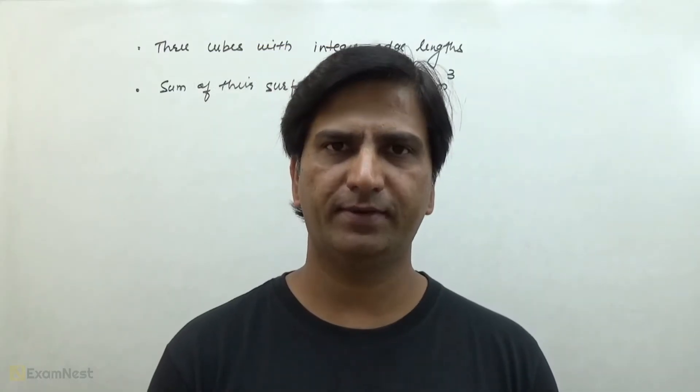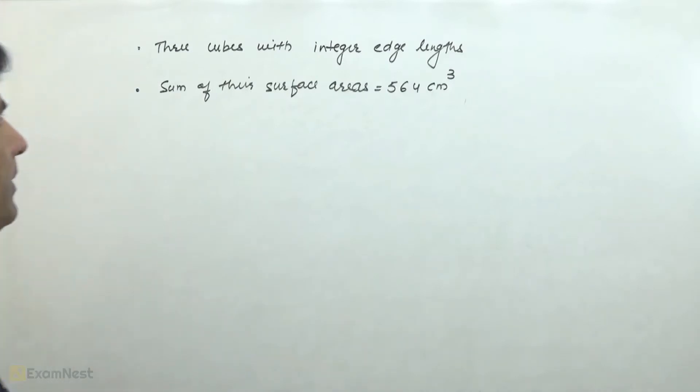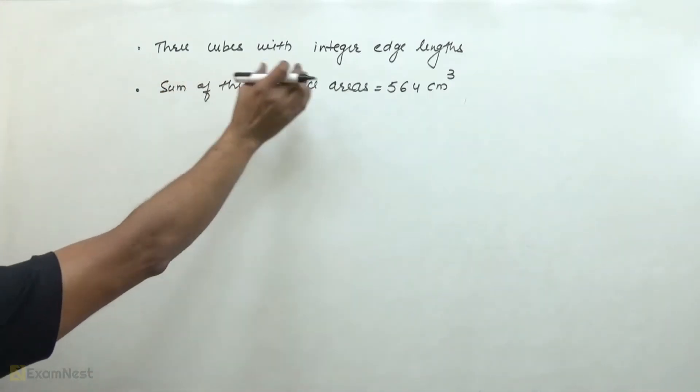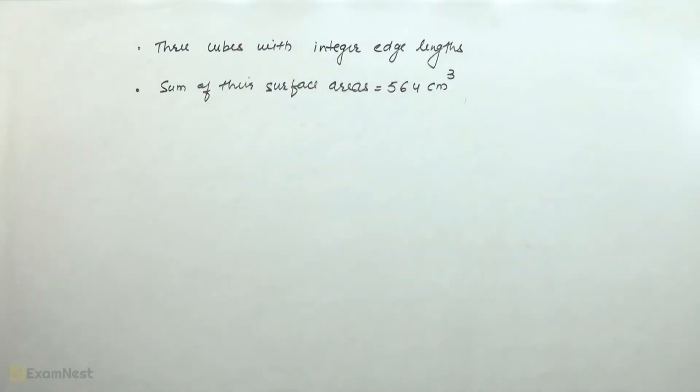This question is a moderate level question. We have three cubes with integer edge lengths. The surface areas are given by their sum. We have to find the possible values of volume. The formula of the surface area is 6 times the side squared.